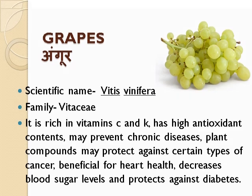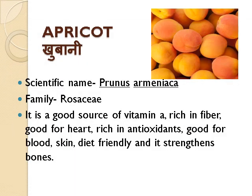Apricot, Khubani, scientific name Prunus armeniaca, family Rosaceae. It is a good source of vitamin A, rich in fiber, good for the heart, rich in antioxidants, good for blood and skin, diet-friendly, and it strengthens bones.